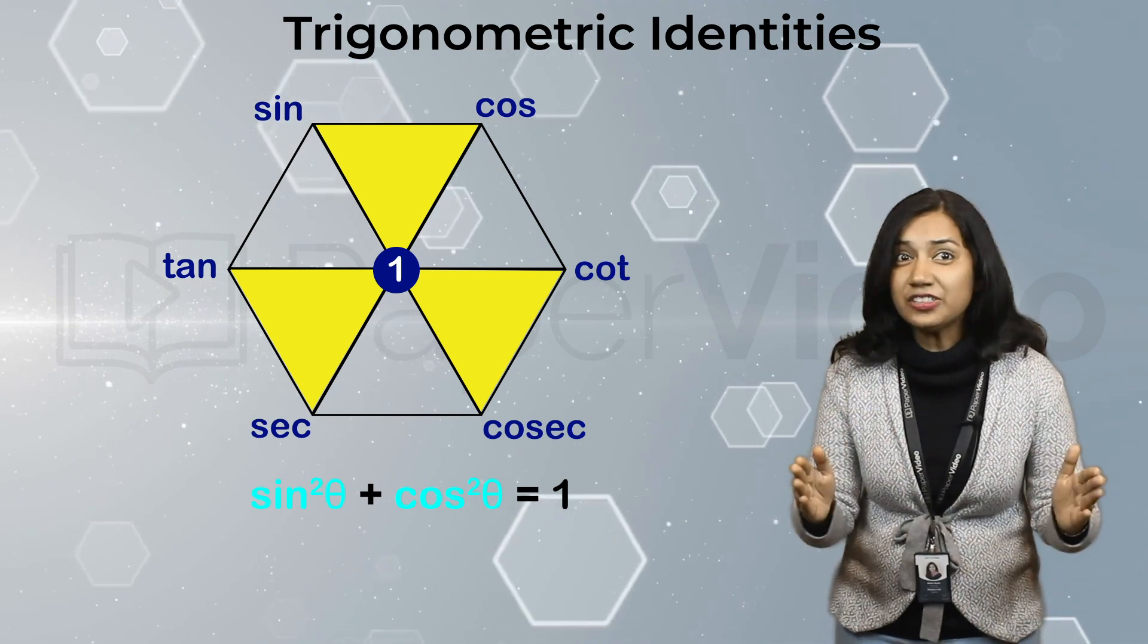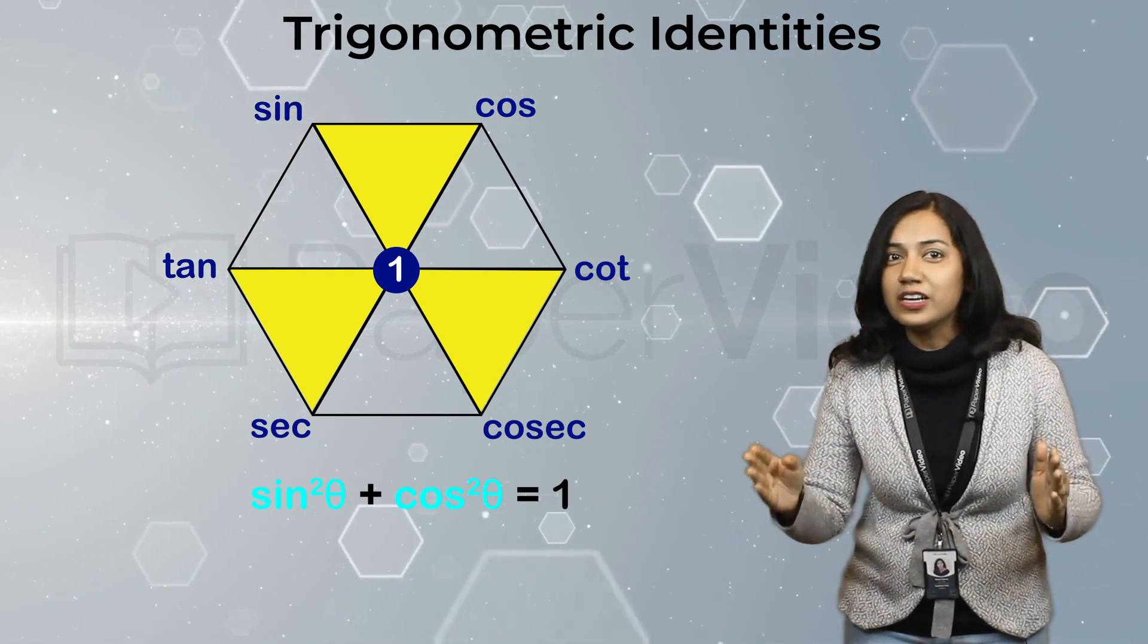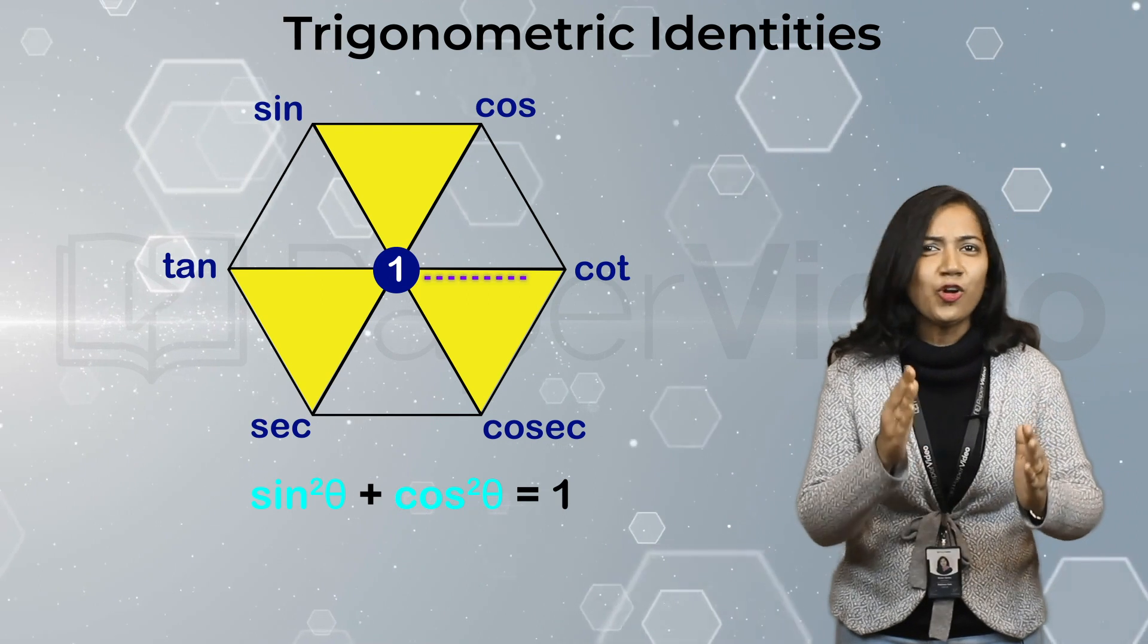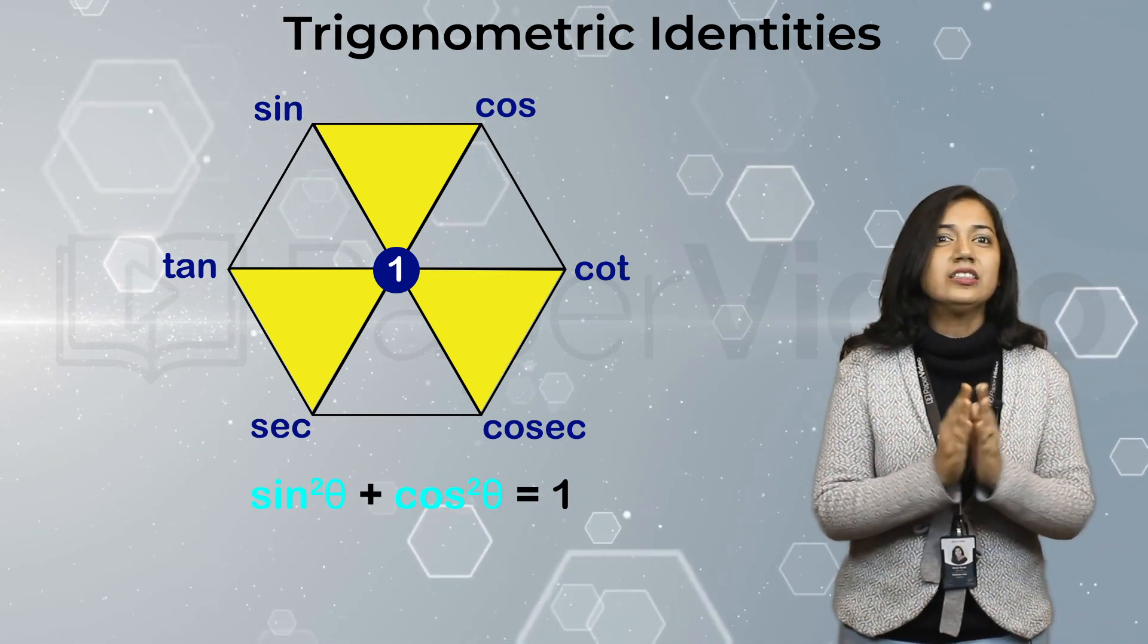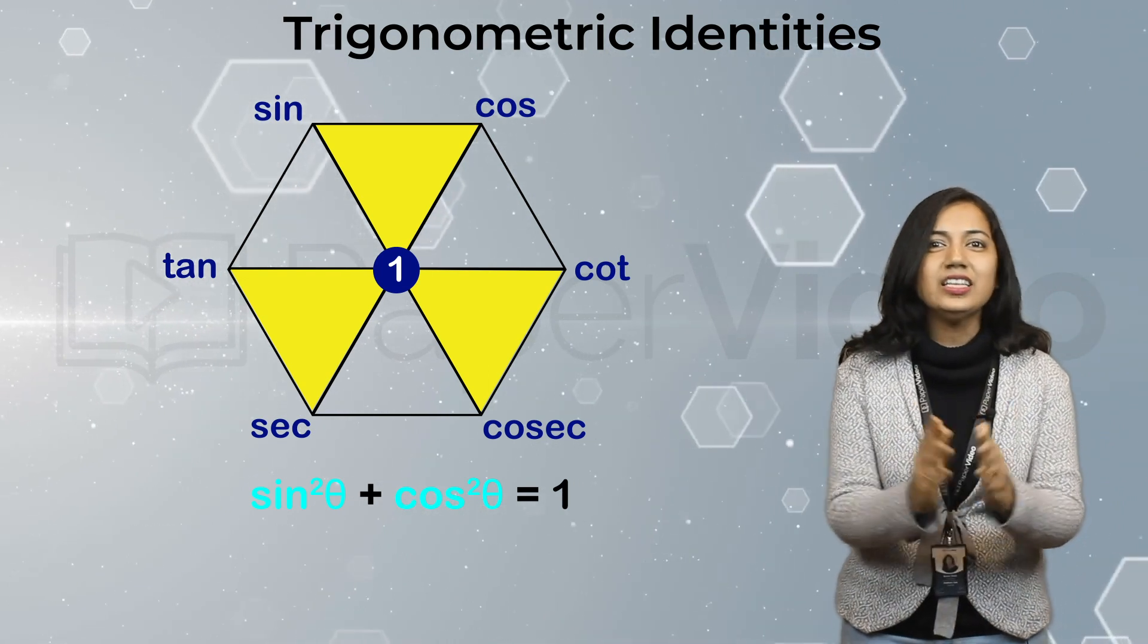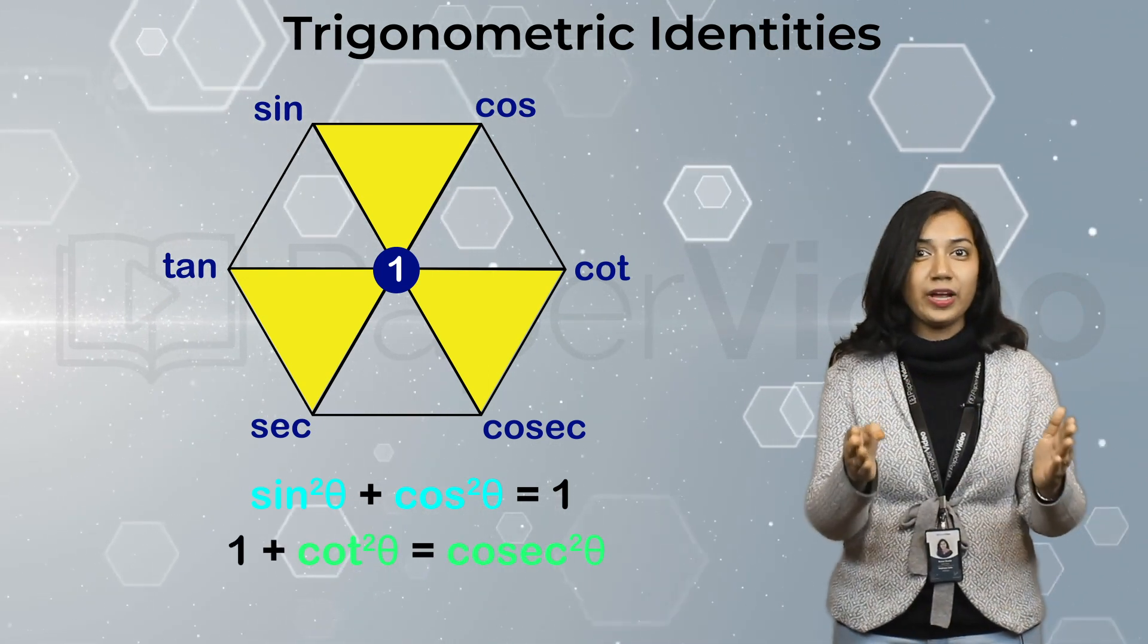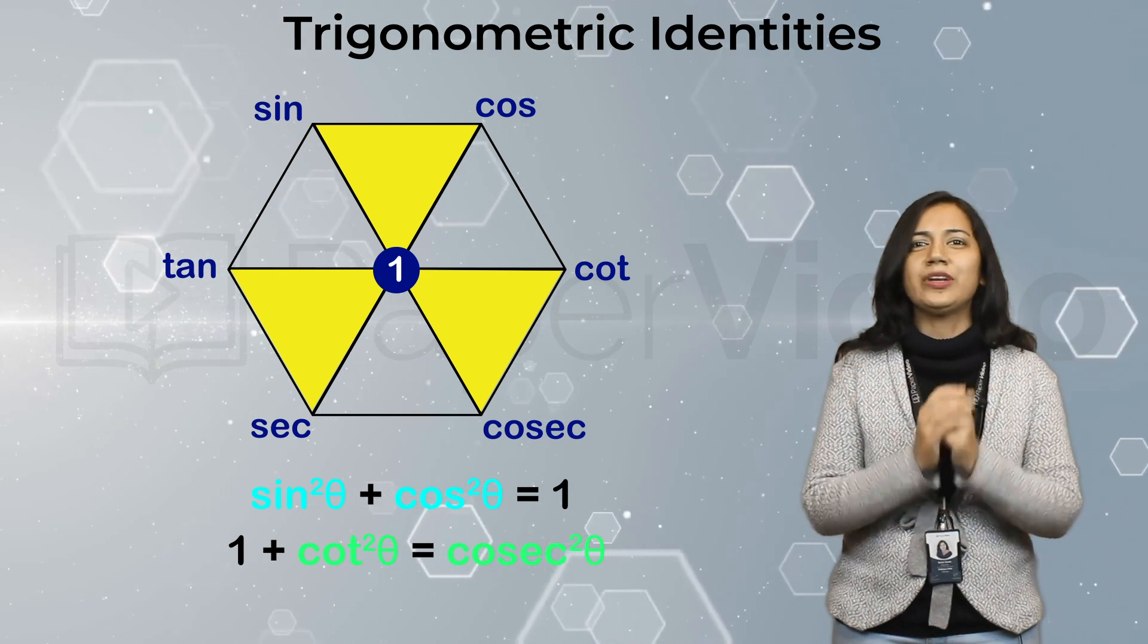And now, from the second triangle, going in clockwise direction, we get 1, cot and cosec. Squaring these three in order, we can write the second trigonometric identity as 1 plus cot square theta equals cosec square theta.